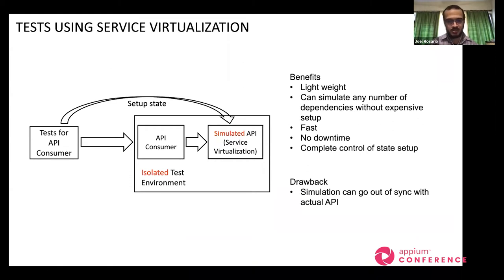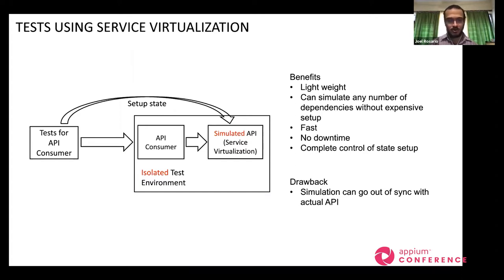The drawback, as some have pointed out in chat, is that simulations can go out of sync with the actual API. You can then end up with integration errors when the consumer and API are put into an integrated environment for the first time. The higher the environment, the longer it takes to resolve these errors. We really want to shift left — we want to catch these errors as early as possible, even in the development environment on a laptop before anything gets deployed.